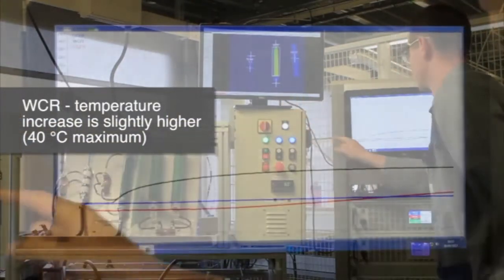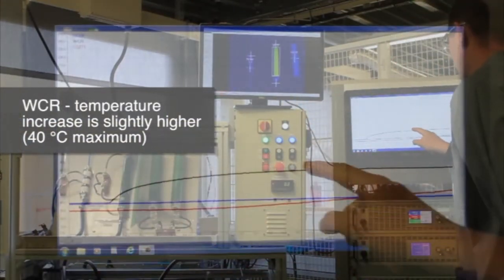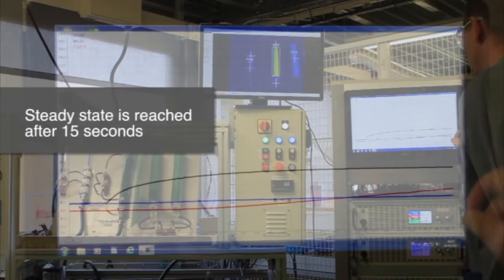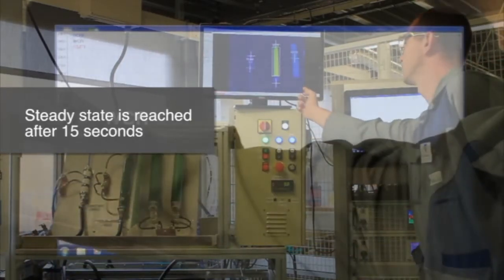On the WCR the temperature increase is slightly higher, 40 degrees C maximum and the steady state is reached after 15 seconds, the black curve.